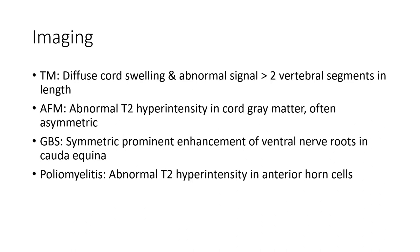Imaging findings for transverse myelitis include cord swelling and abnormal T2 signal spanning more than 2 vertebral segments in length, with abnormal T2 hyperintensity in the central gray matter, often asymmetric. In acute flaccid myelitis and poliomyelitis, imaging shows abnormal T2 hyperintensity in the anterior horn cells.